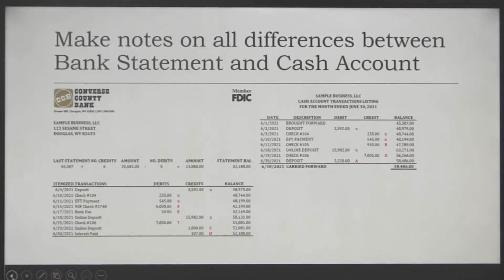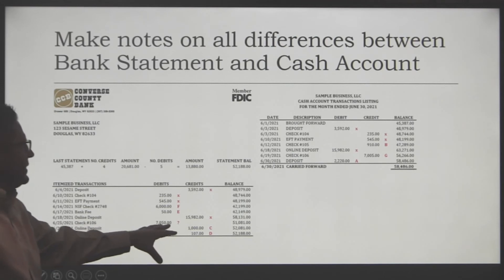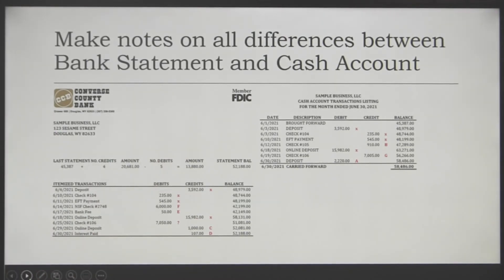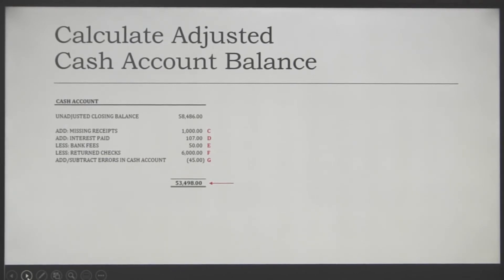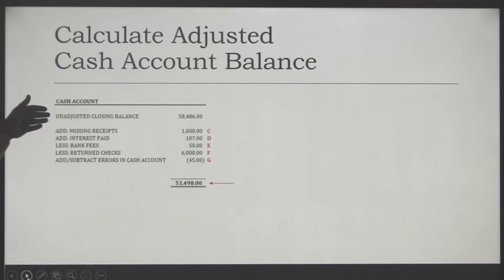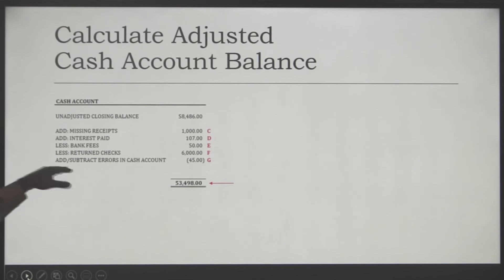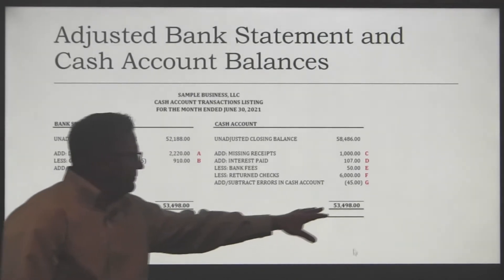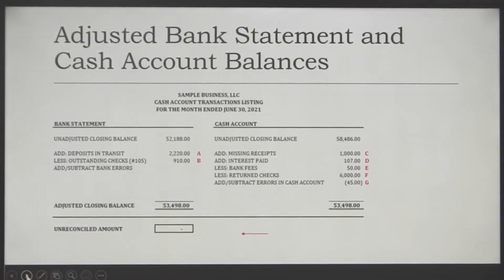The final difference is item G. It looks like the bank was correct here — the check was for $7,050. It looks like we accidentally transposed the last two numbers and typed it in as $7,005, so we need to reduce the cash account by $45. When you take the unadjusted closing balance of $58,486, add the missing receipts and the interest paid, subtract the bank fees, the return check, and that $45 for the error, we come up with a final balance of $53,498. Put the two sides next to each other — they both agree at $53,498. The unreconciled amount is zero.